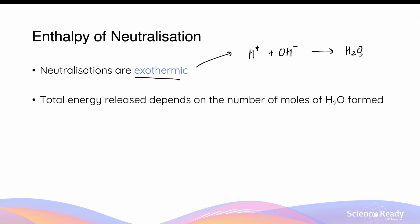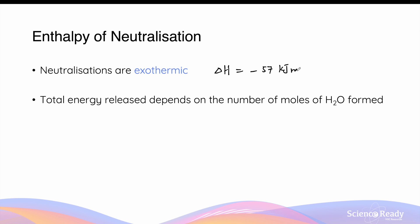Every time the covalent bond is formed in the new molecule of water, some amount of energy is released, and this energy is referred to as the enthalpy of neutralization. It is usually written as ΔH = −57 kJ/mol, which means that 57 kilojoules of energy would be released for every one mole of water formed. The total energy released depends on the number of moles of water actually formed.